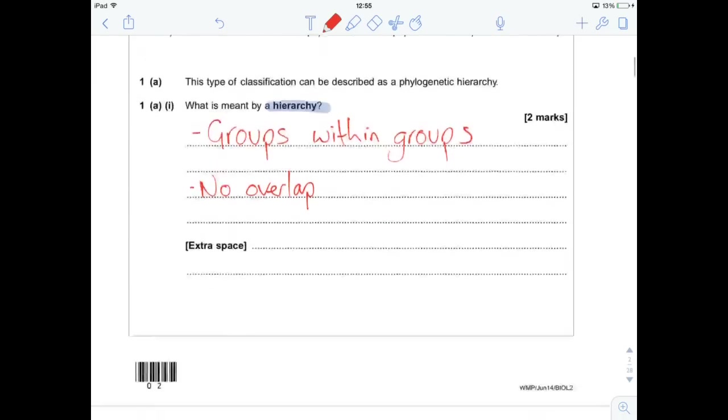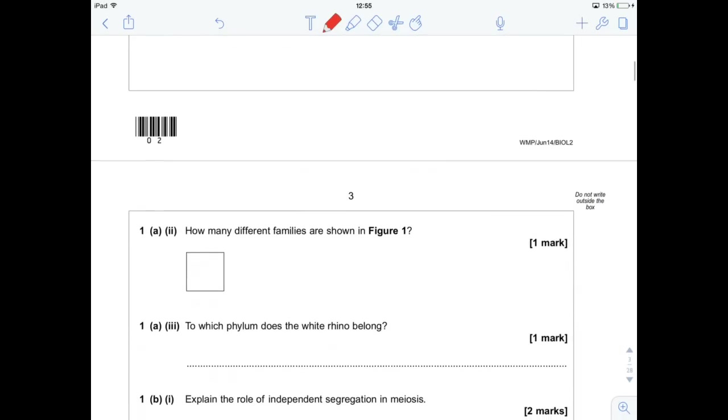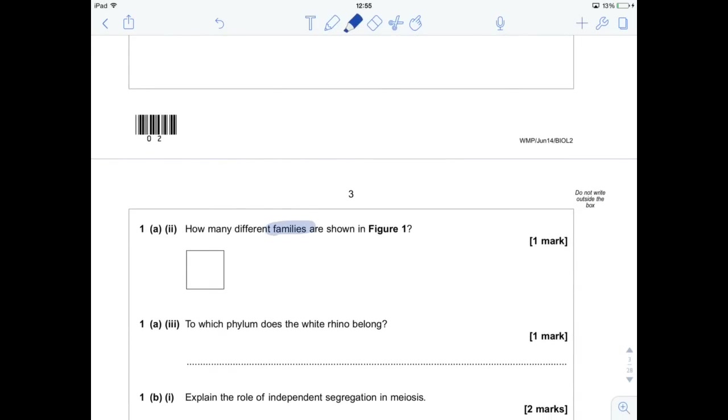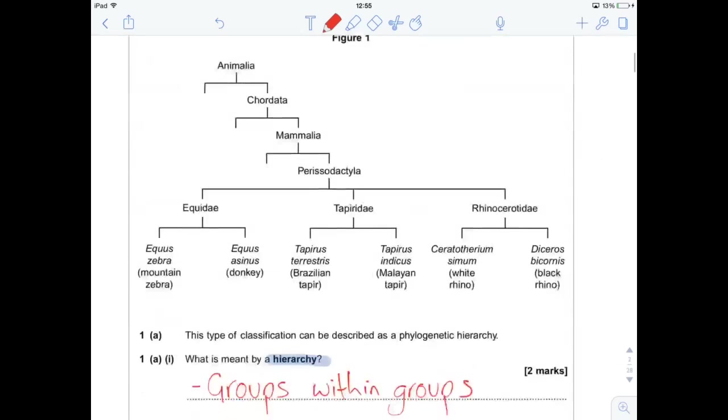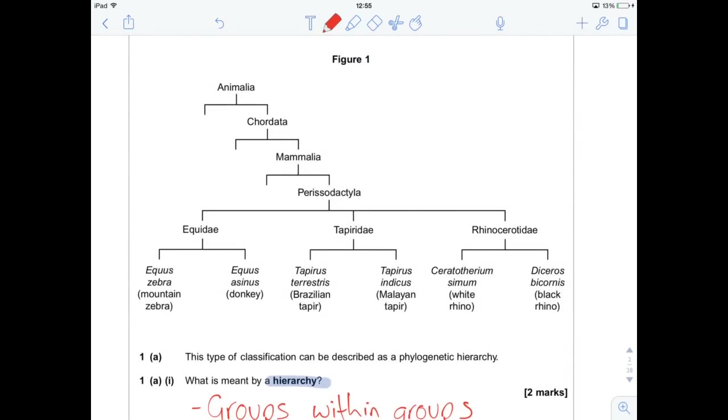Fantastic. Let's crack on. How many different families are shown in figure one? So we're looking for families. So let's go back to our hierarchy and put the names on. So here's the kingdom, the animal kingdom. This is the phylum. This is the class. This is the order. The gay pea crisps only feed. Families here on this level. And then genus and species below. So we have one, two, three families here.